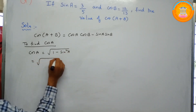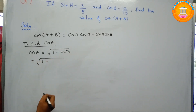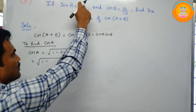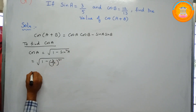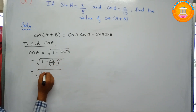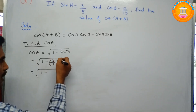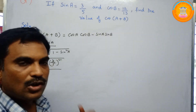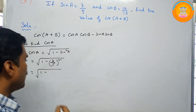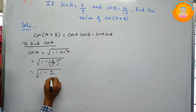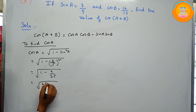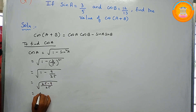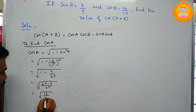So this equals square root of 1 minus — what is sin a? It is given in the problem as 3 by 5 — so square root of 1 minus (3 by 5) whole squared. Apply the square to numerator and denominator: 3 squared is 9, 5 squared is 25. Taking LCM gives square root of (25 minus 9) by 25, which is square root of 16 by 25.